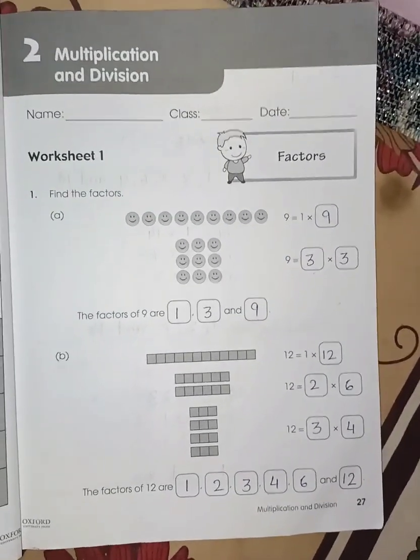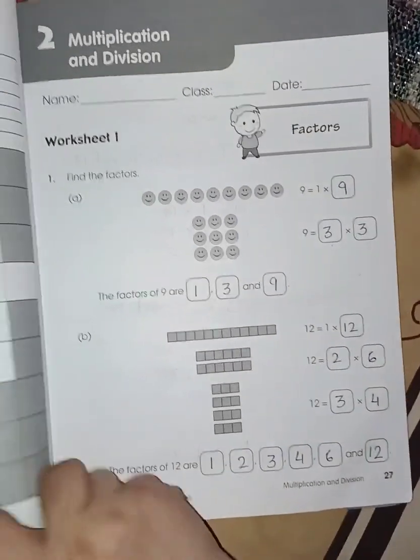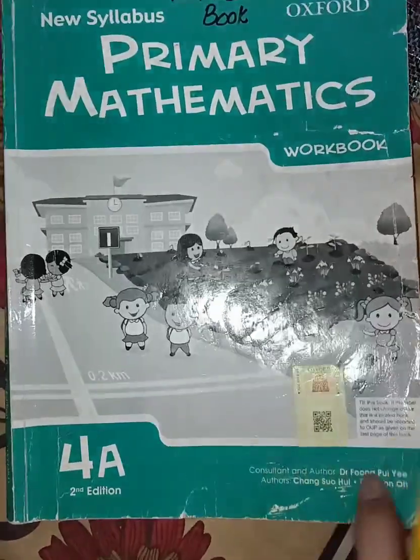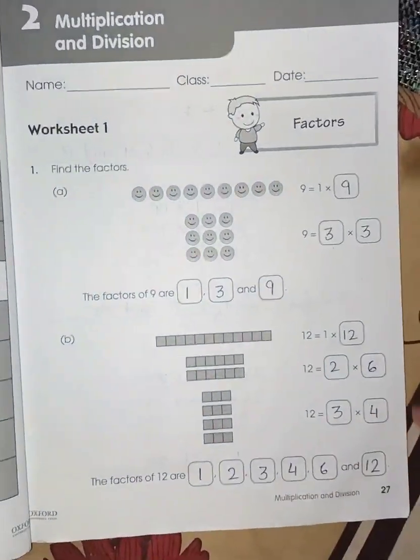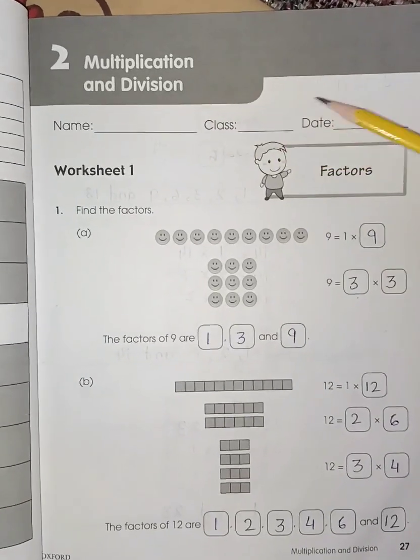Today we are going to start chapter number 2, Multiplication and Division. You can see book 4A, 2nd edition, chapter number 2. So your worksheet 1 is factors. You have to write your name, class and date.